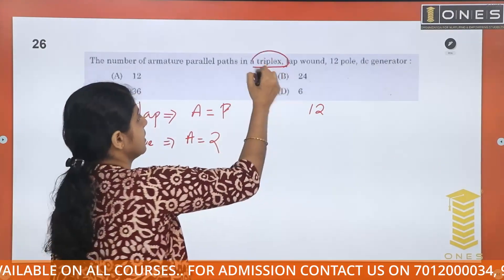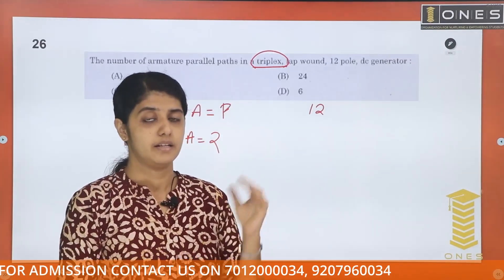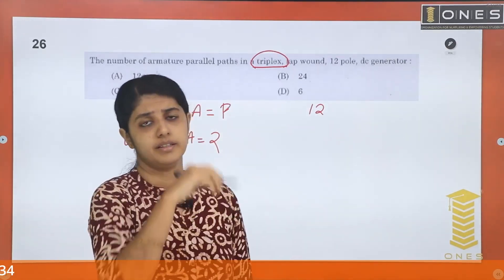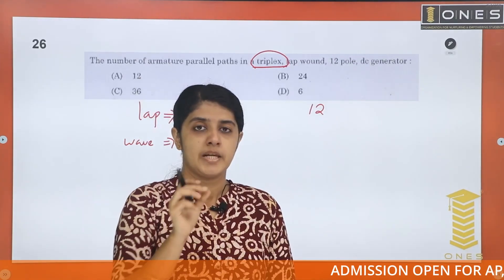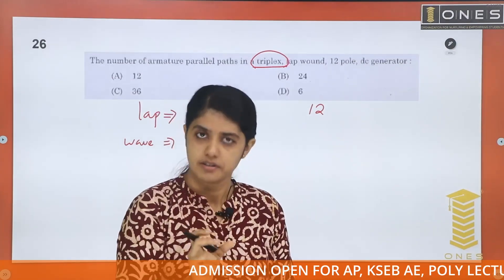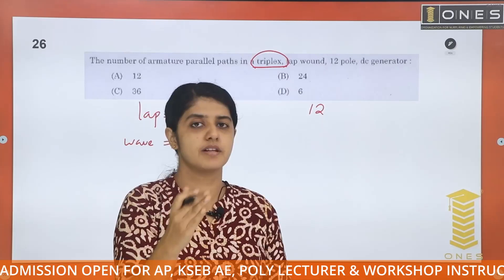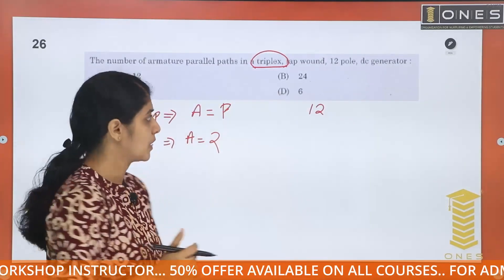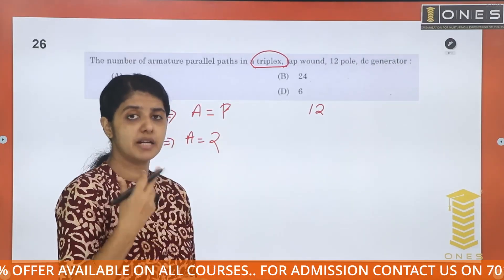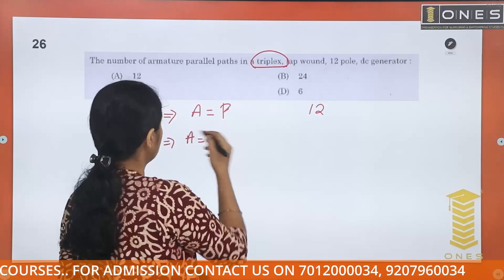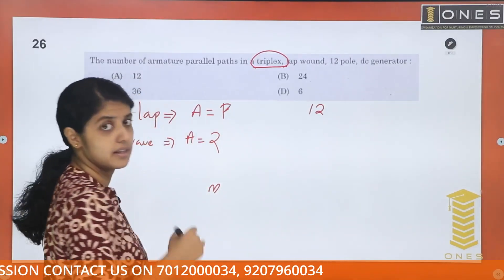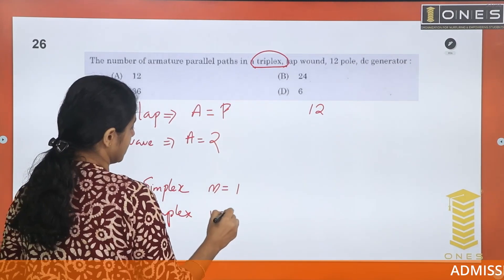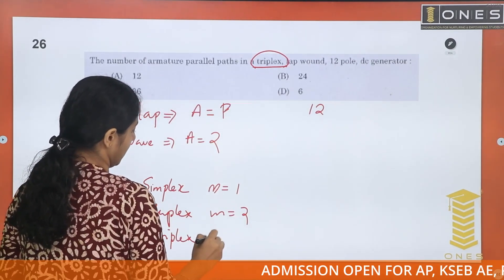Now, this is a triplex winding. The winding types are simplex, duplex, and triplex. The multiplicity factor is m. For simplex, m equals 1; for duplex, m equals 2; for triplex, m equals 3.